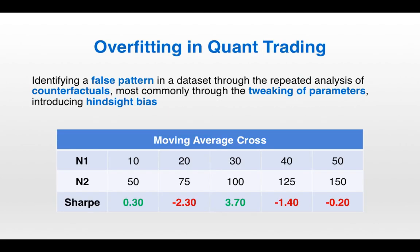Now let's extend that definition to look at overfitting in quant trading. Overfitting in quant trading is identifying a false pattern in a data set through the repeated analysis of counterfactuals, most commonly through the tweaking of parameters, introducing hindsight bias. Think back to the moving average cross example from video 2. The strategy has two parameters, n1 and n2. If we run the strategy for five different parameter sets, for n1 equals 30 and n2 equals 100, the Sharpe ratio is 3.7. But if you vary those parameters just a little bit — down to 20/75 or up to 41/25 — the strategy loses money.